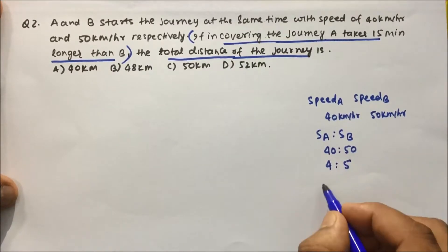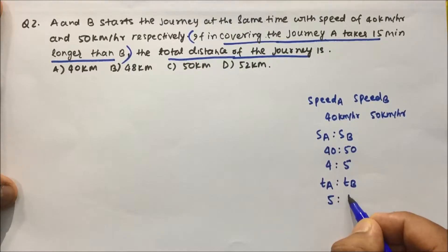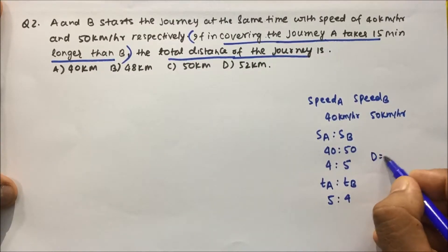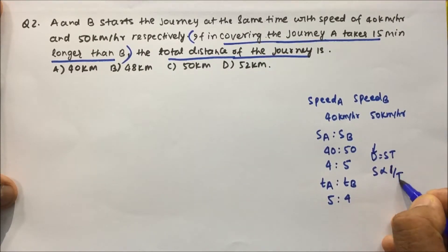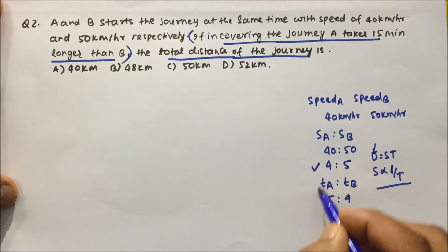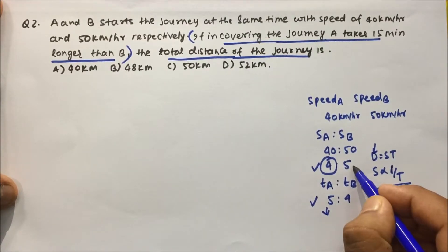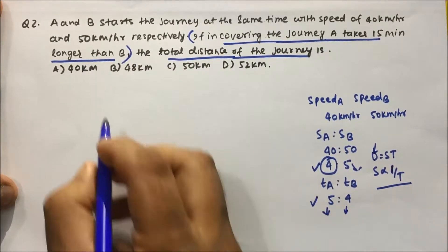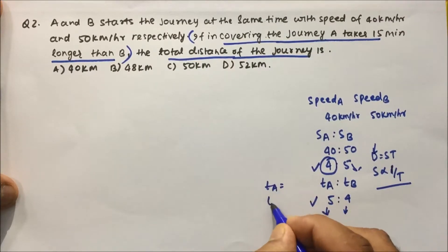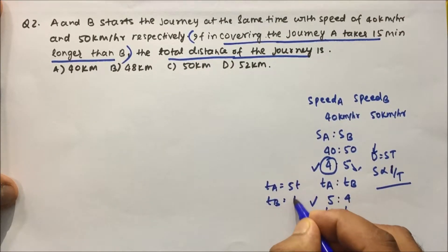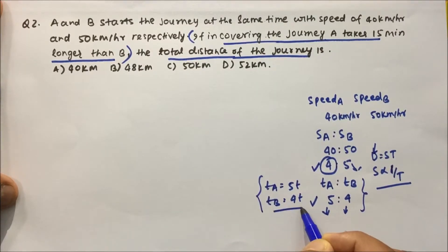If we write in terms of time, since d = s × t and distance is constant, speed is inversely proportional to time. So if speed ratio is 4 is to 5, then time ratio will be 5 is to 4. If speed is less it takes more time; if speed is more it takes less time. So we can write time of A = 5t and time of B = 4t.